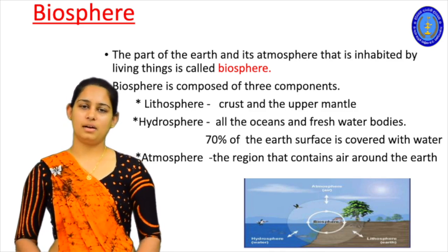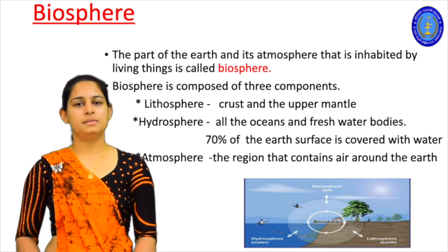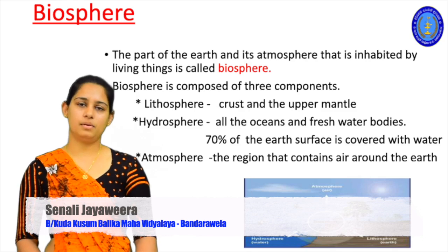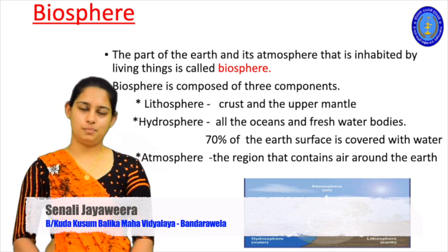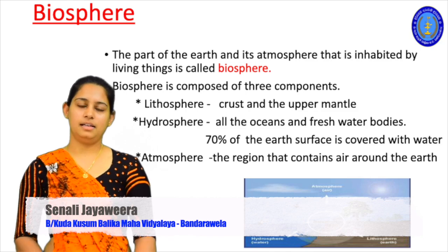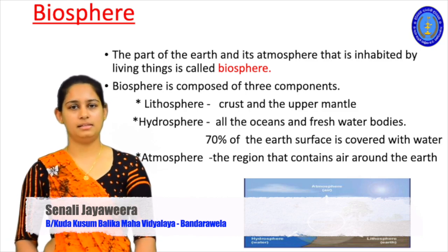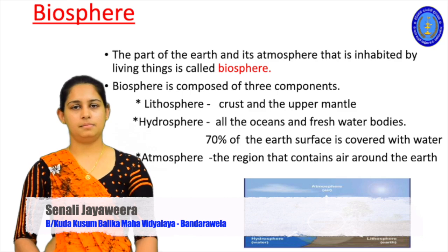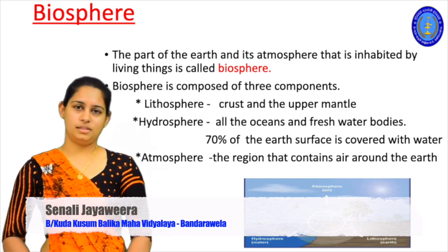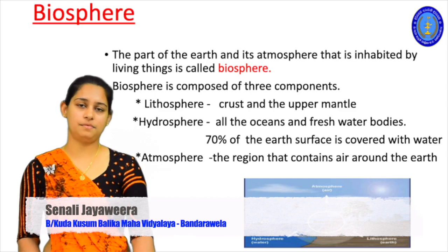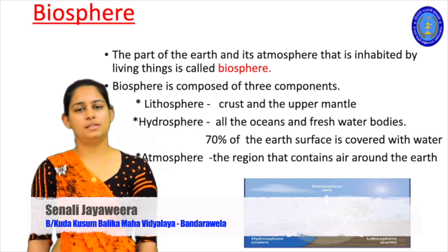The biosphere can be divided into three parts because organisms are distributed in different places. The three components of the biosphere are the lithosphere, hydrosphere, and the atmosphere. Lithosphere means the land environment — it is made up of the crust and the upper mantle. Hydrosphere includes all the oceans and freshwater bodies; about 70% of the earth's surface is covered with water. The atmosphere is the region containing air around the earth. You can see all three parts of the biosphere in this picture.